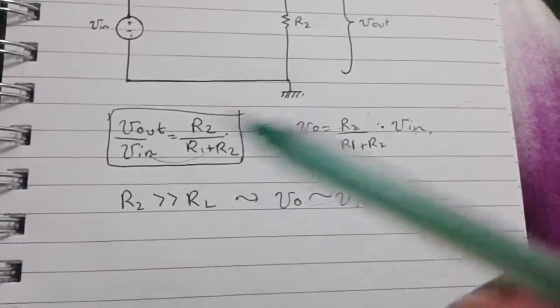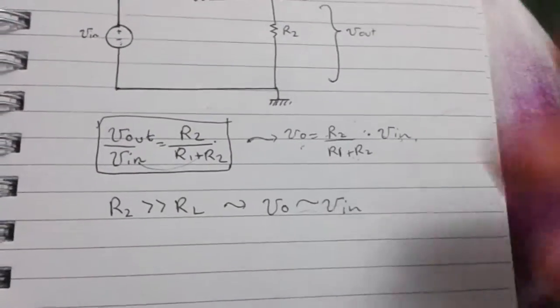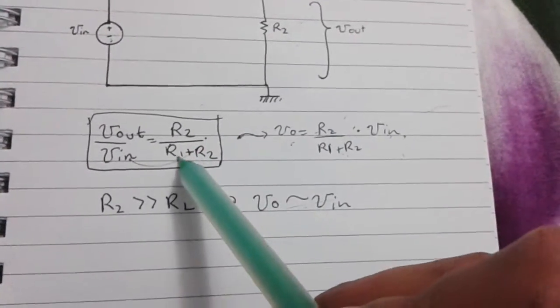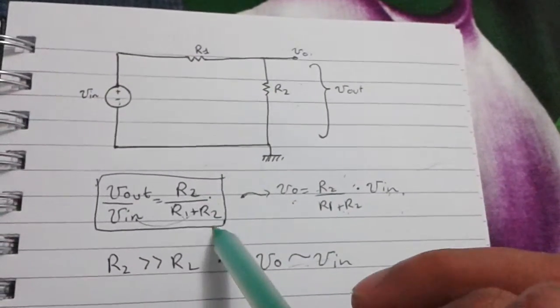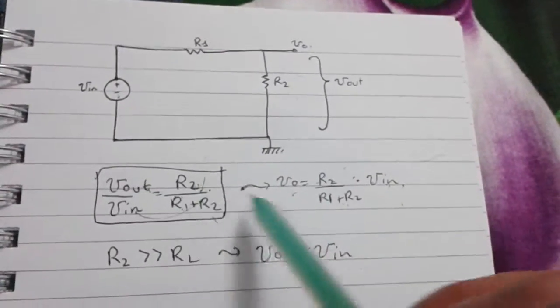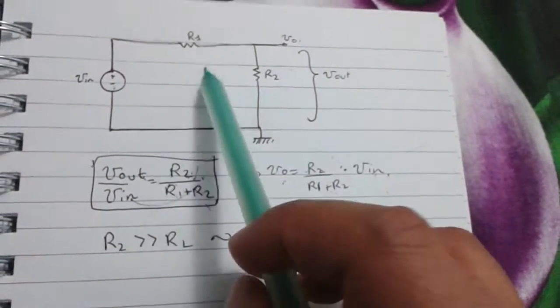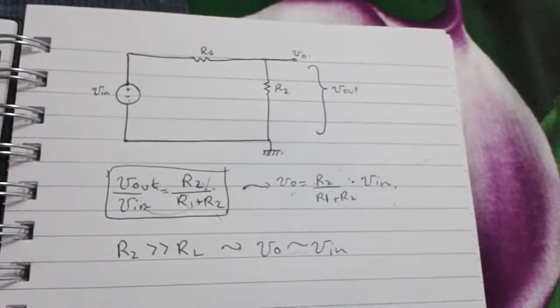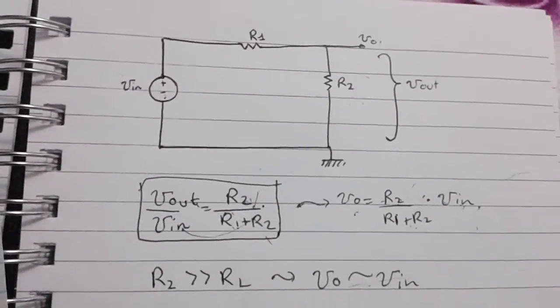Now, if you want to see it numerically, plug 0 into R1, that means no resistance here. What do you get? R2 over R2, which is 1, right? It's like unity gain. So, V_out equals V_in. So, very small resistance and very, very great resistance.